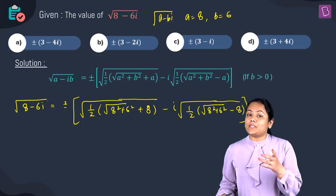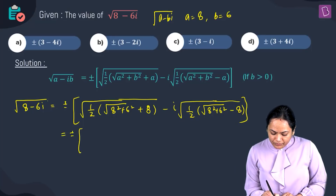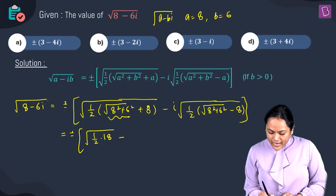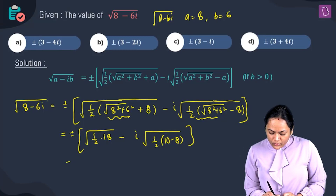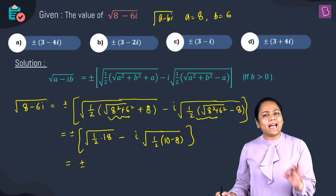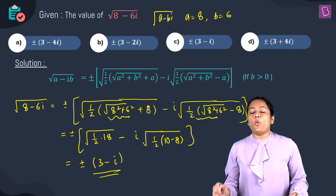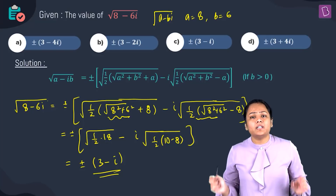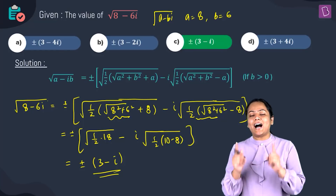Now 8² + 6² equals 100, so the square root is 10. Substituting: plus or minus root of half times (10 + 8 = 18) gives root of 9, which is 3. The second term: half times (10 - 8 = 2) gives i times 1. So the final answer is plus or minus (3 - i). Looking at the options, the answer is C.